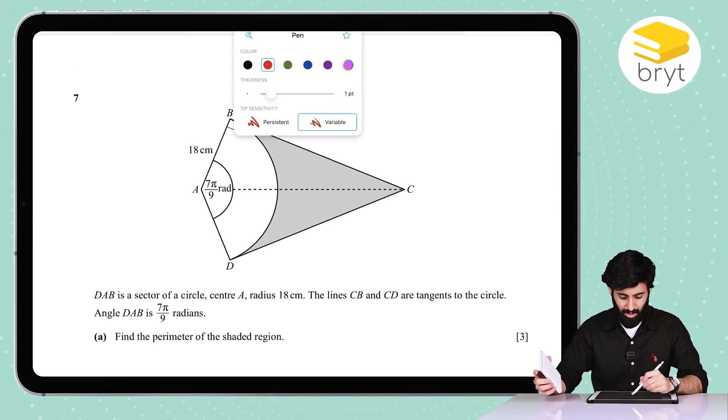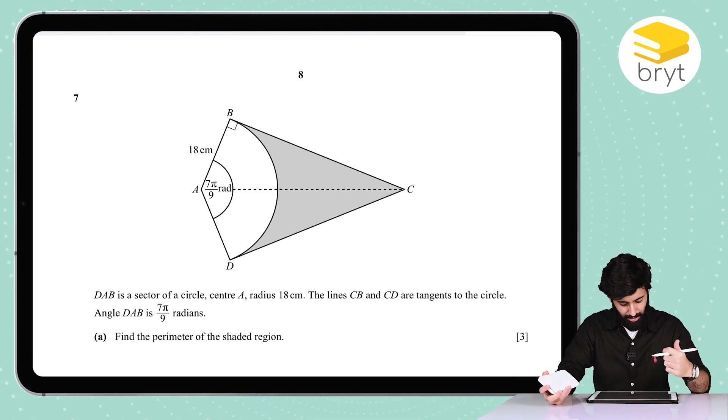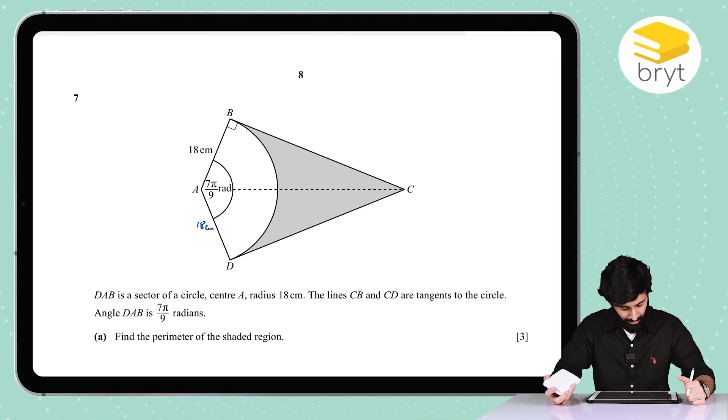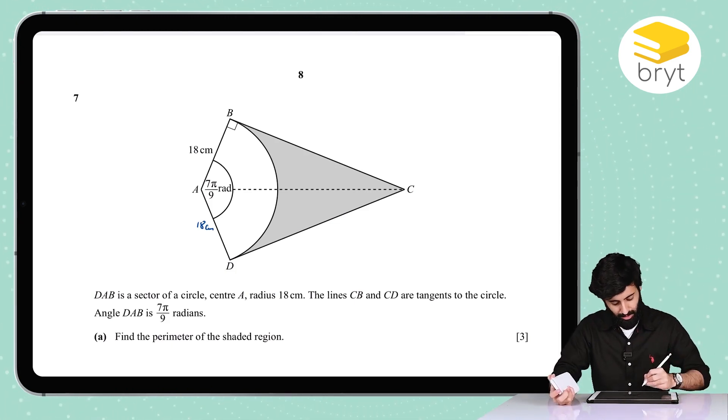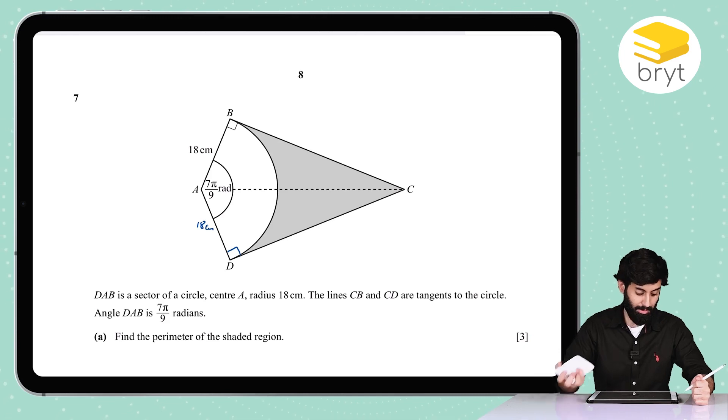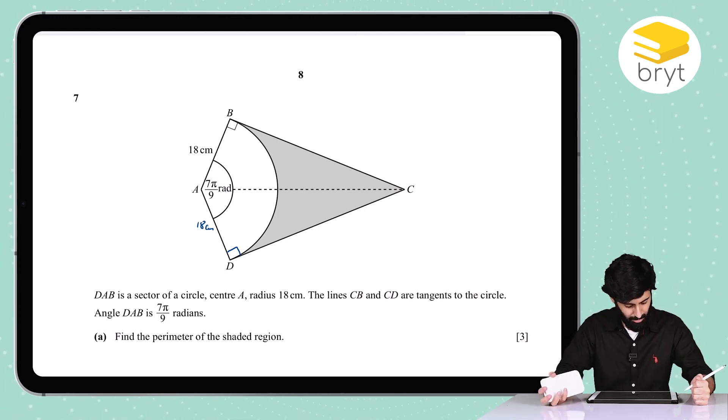It says here DAB is a sector of a circle, so that instantly tells us that AD is also going to be equal to the radius, therefore 18 centimeters. The lines CB and CD are tangents to the circle, and you can see the question has made a right angle over there, and that means we're going to have a right angle over here also. Angle DAB is 7π over 9 radians, we're going to need that.